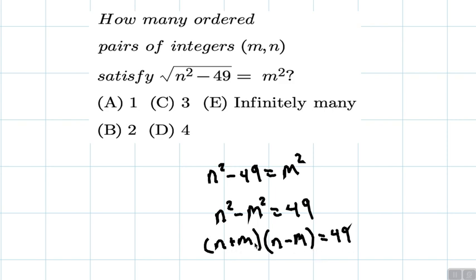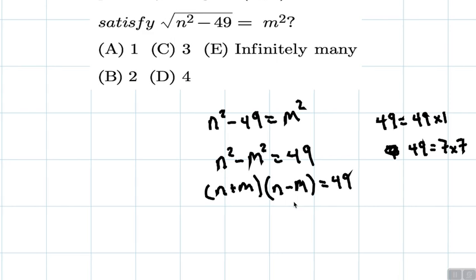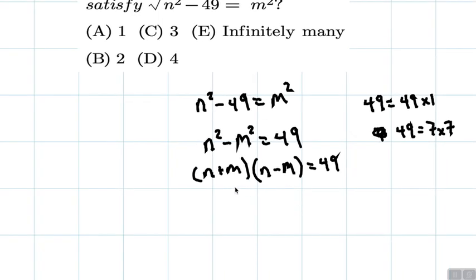So it's got to be true this times this equals 49. We can then look at factors of 49. So 49 is equal to 49 times 1. 49 is also equal to 7 times 7. So let's look at the instance where it's equal to 7 times 7.